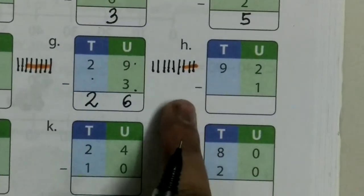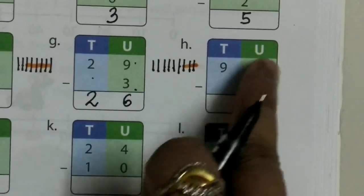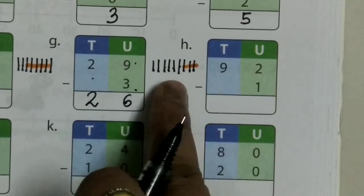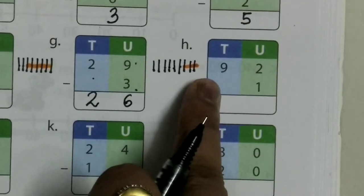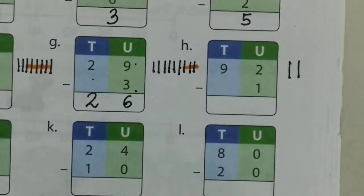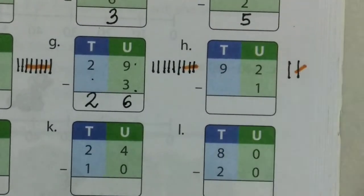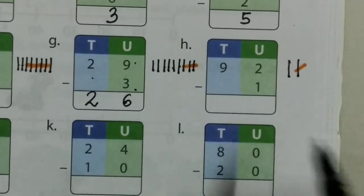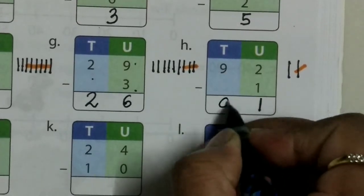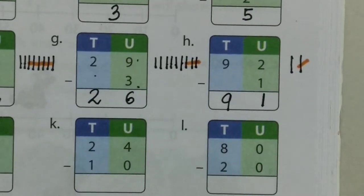Coming to the next, question H. In the units column we have 2, and in the tens we have 9. In units, when we take away 1, it will be 1. So 2 minus 1 equals 1. And 9 in the tens column — 9, 10, 4.